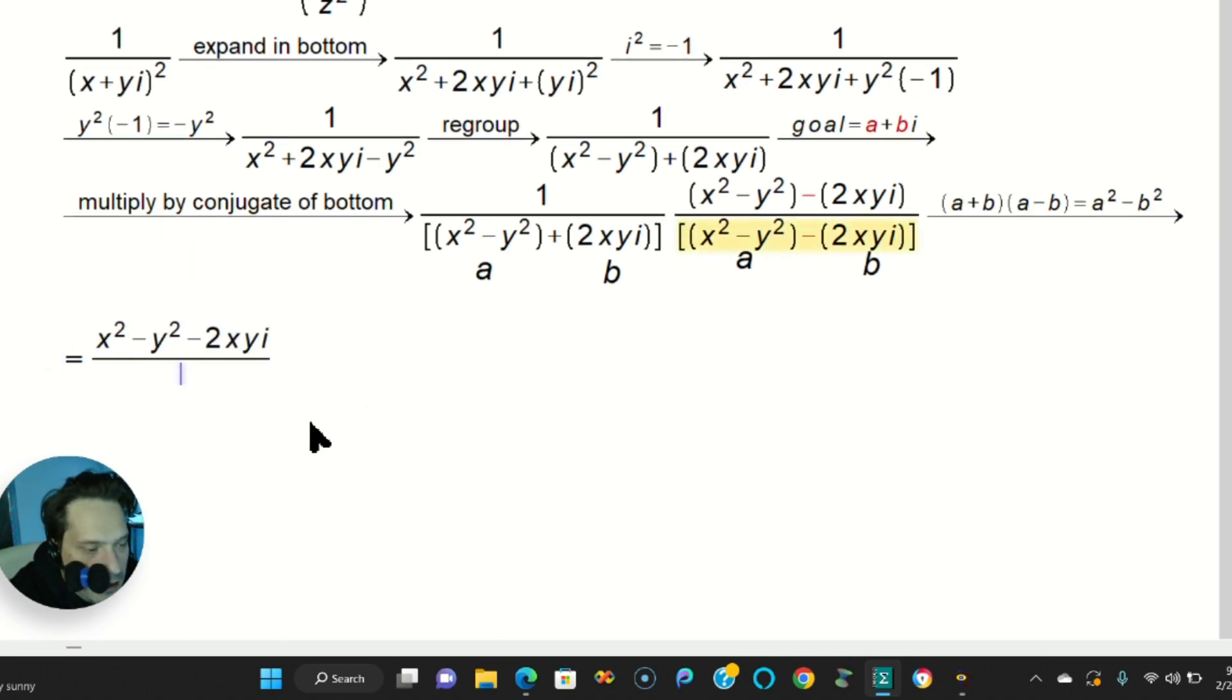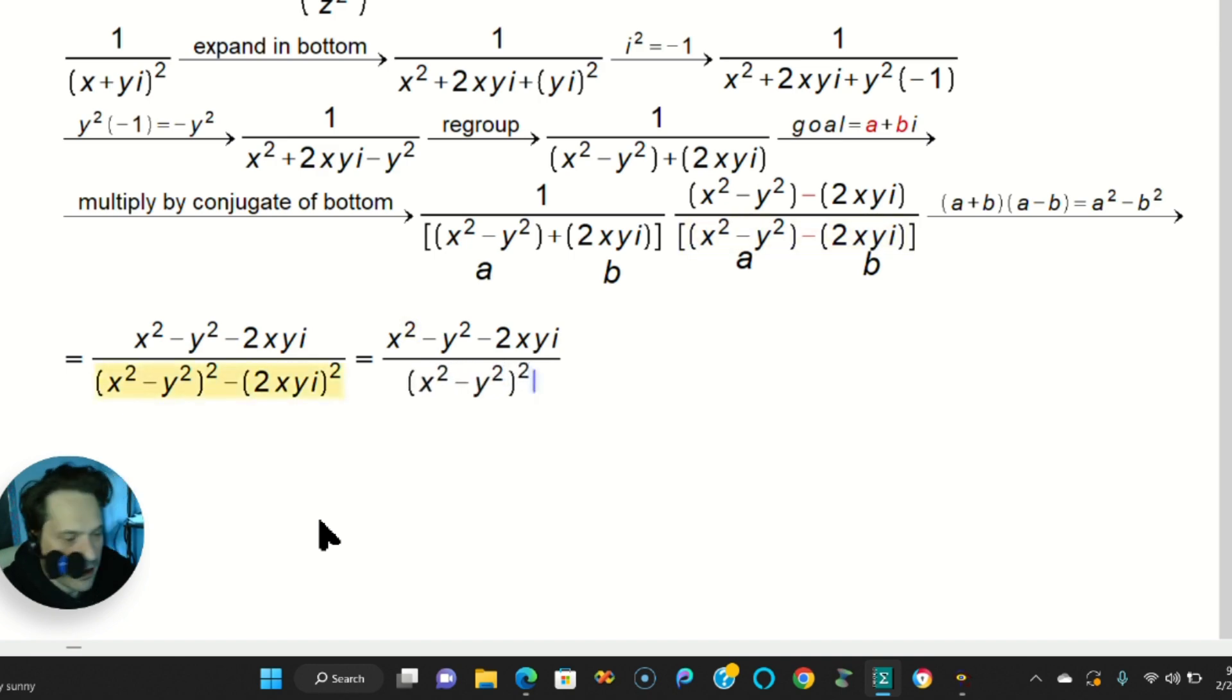Okay, let me punch down the line now because it's not going to fit. Let's continue. So when I do that, I'll have, okay, let's try it one more time. x squared minus y squared squared minus 2xyi quantity squared. That's where the difference of squares pattern is being applied. So then you continue here. You're going to have x squared minus y squared minus 2xyi in the bottom.